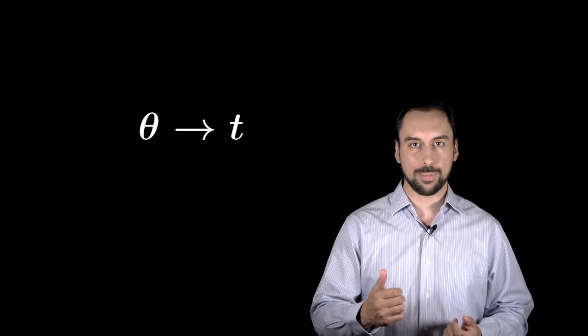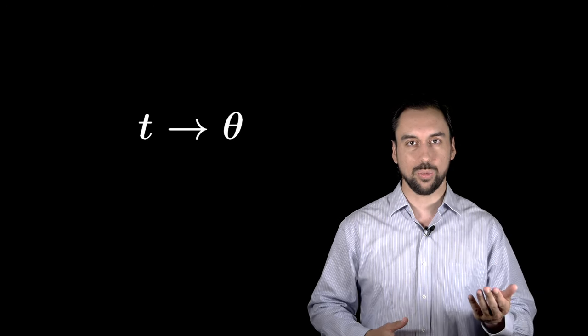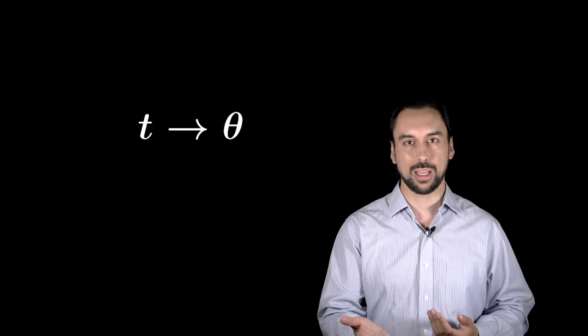Kepler's equation is very useful to solve two problems. One is how to calculate the time after passing the periapsis when you know the true anomaly. And the other problem is the opposite, how to calculate the true anomaly when you know the time after passing the periapsis.